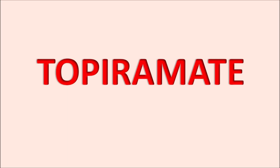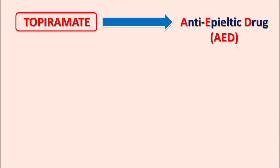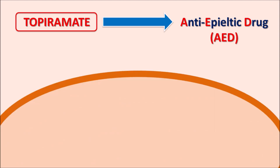Hi everyone. Today in this video we are going to discuss about topiramate. What is this drug topiramate? This drug belongs to the category of anti-epileptic drugs, commonly known as AEDs. Topiramate is an anti-epileptic or anti-convulsant agent, and this drug acts by targeting different types of ion channels.